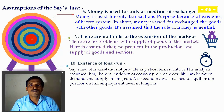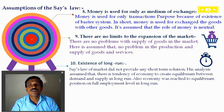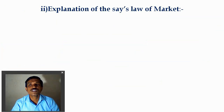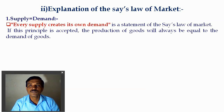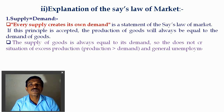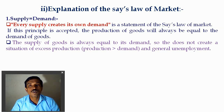Demand equals supply in the long run. In the long run, the economy tends toward equilibrium — demand equal to supply — and full employment according to J.B. Say's law. The supply equals demand. Every supply creates its own demand. According to him, the production of goods will always equal their demand, so every good produced is sold in the market. The supply of goods is always equal to demand, so there is no situation of surplus production or overproduction.